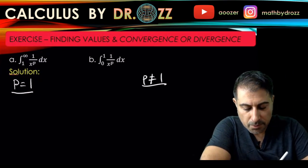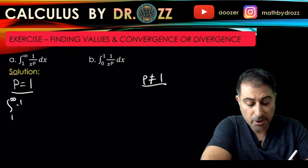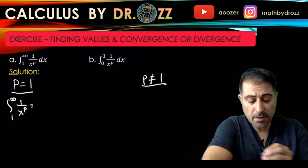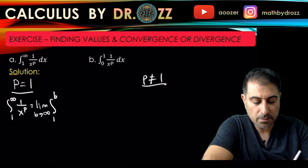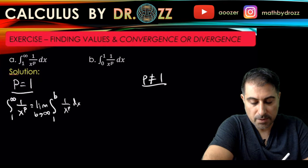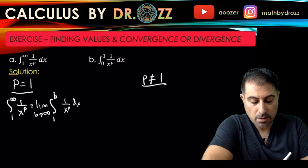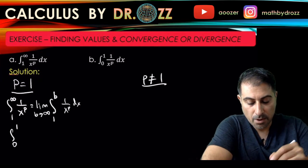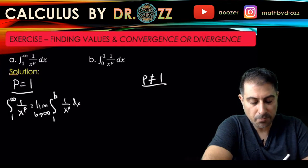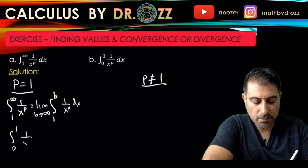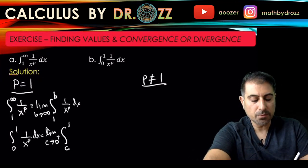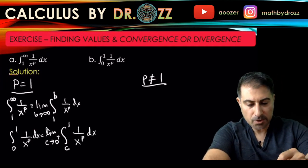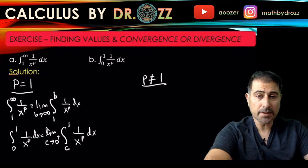For the first integral, I'm going to replace the limit infinity by b, then pass the limit as b approaches infinity of the integral from 1 to b of 1 over x to the p dx. For the second integral, zero is a problem point, so we use a limit: the limit as c approaches zero from the right of the integral from c to 1 of 1 over x to the p dx.